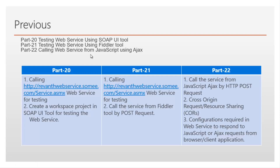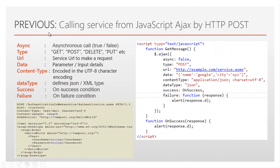If you haven't watched the previous videos, I strongly recommend watching before proceeding. In part 20, I discussed testing web services using the SOAP UI tool. In part 21, I discussed testing web services using the Fiddler tool. And in part 22, I discussed calling a web service from JavaScript using Ajax, where we covered calling the service from JavaScript Ajax by HTTP POST request.